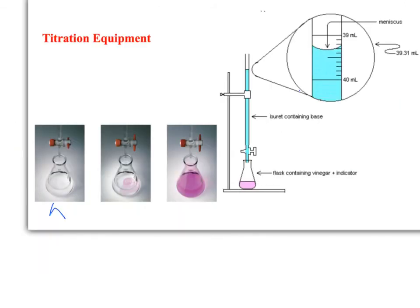Now that we have our 20 mils in that flask, this 20 mils is called an aliquot. It's an exact amount that's put in the flask.